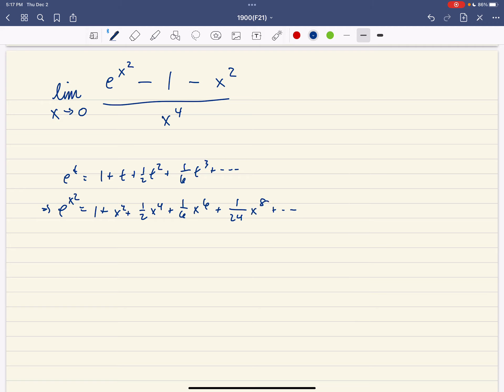And so if we take e to the x squared minus 1 minus x squared, we're taking e to the x squared, we're moving over the 1, we're moving over the x squared. The leading term is going to be 1 half x to the 4th. So this is going to be 1 half x to the 4th plus 1 sixth x to the 6th plus 1 over 24 x to the 8th and so on. So this is going to be 1, all divided by x to the 4th.